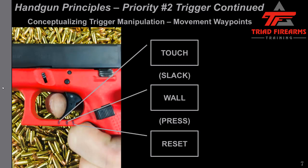As we conceptualize trigger manipulation, it's good to identify movement waypoints within the trigger's travel. The first waypoint is touch — my finger is contacting the face of the trigger, and if there's a trigger safety tab like on this Glock, that is being depressed. The area between touch and the next waypoint — wall — is where the slack or pre-travel is. That is the initial movement of the trigger, the preliminary travel to the point where it stops at the wall.